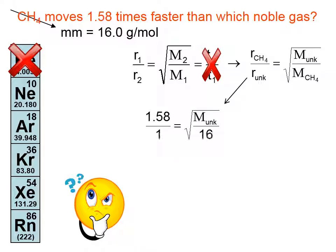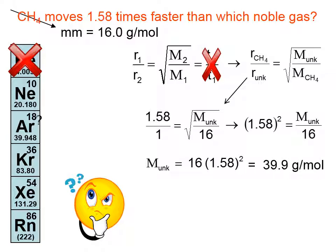We don't know the rate at which methane moves, nor do we know the rate at which the unknown moves. But we know that methane moves 1.58 times faster. So I'm just going to assume that the unknown moves at a rate of, say, 1 meter per second, which means that methane would move at a rate of 1.58 meters per second. Or if you don't like that, you could say, well, let's assume that the unknown moves at a rate of 100 meters per second, then the methane would move at 158. In any case, it's not going to change what you need to do. Let's get rid of the square root sign by squaring both sides. Let's solve for the mass of the unknown, and we get about 39.9 grams per mole.